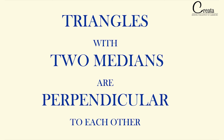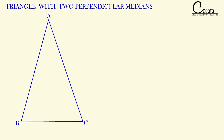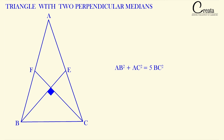The next special case is when two medians are perpendicular to each other. Take a triangle ABC with two medians CF and BE that are perpendicular to each other — the angle between them is 90°. For this case, the applicable formula is: AB² + AC² = 5 · BC². Here AB, AC, and BC are the three sides. Note that the median does not appear in the formula — only the three sides appear. This formula applies only when two medians in a triangle are perpendicular to each other.